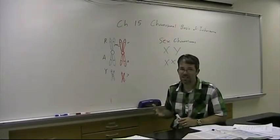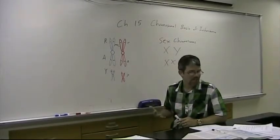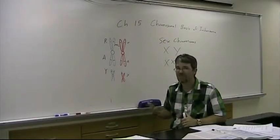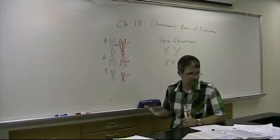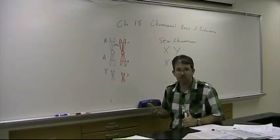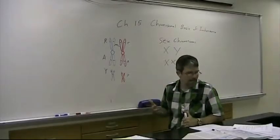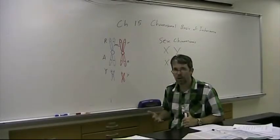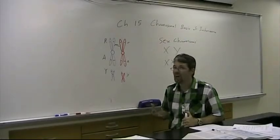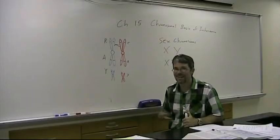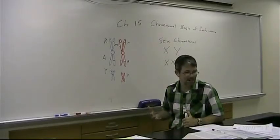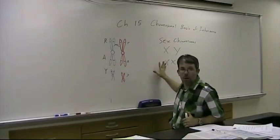Now for chickens, it's the opposite. They have what's called the ZW system, in which case the female is heterogametic and the male chicken is the one with the two chromosomes that are the same. Now bees are even more bizarre in that you have what's called haplodiploidy. A fertilized egg is diploid and becomes a female. An unfertilized egg in a bee becomes a male, which is haploid. So that's the sex determination system in bees. So it's not the same in all organisms.